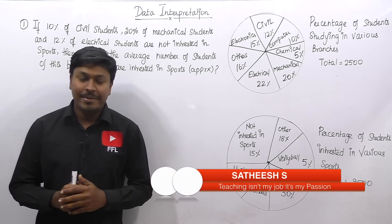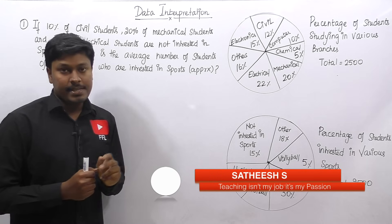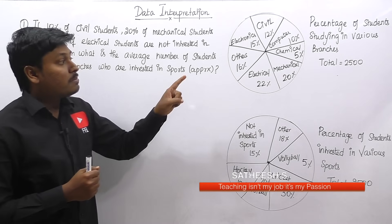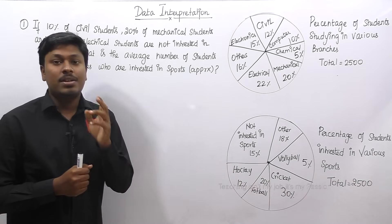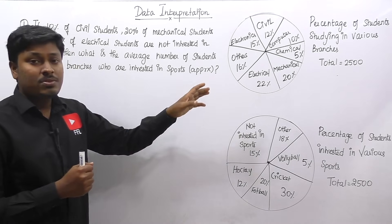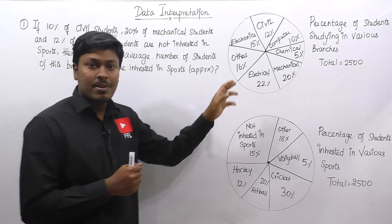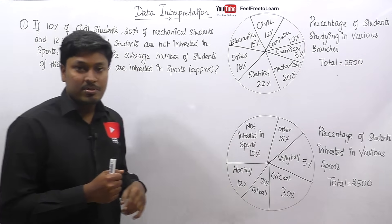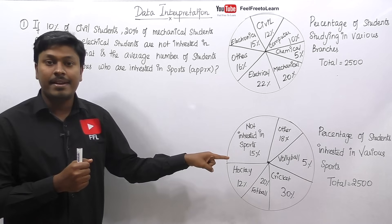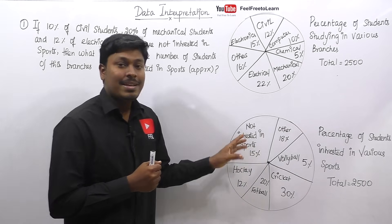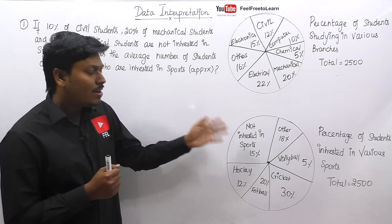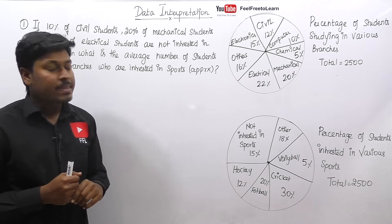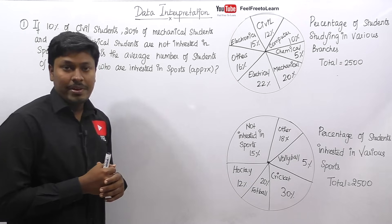Let me move on to the interesting DI equation. Here we have two pie charts. The first pie chart shows the percentage of students studying in various branches — electrical, electronics, triple E, mechanical, chemical, etc. — with a total of 2500 students. The second pie chart shows the percentage of students interested in various sports: hockey, cricket, football, rugby, and others. Students not interested in sports is 15%. All values are given in percentage.